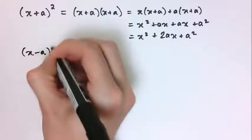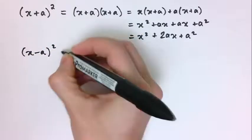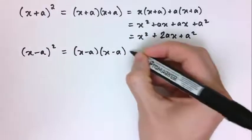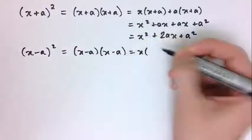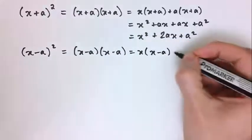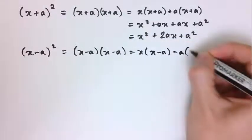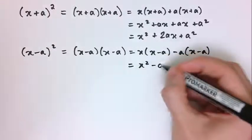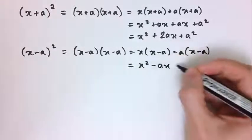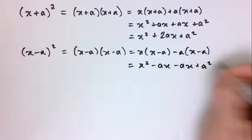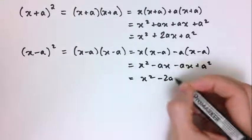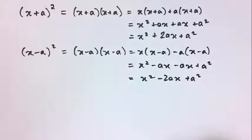A very similar result is for (x - a) squared. That's (x - a)(x - a), which gives x times (x - a) minus a times (x - a), so x squared minus ax minus ax plus a squared, which simplifies to x squared minus 2ax plus a squared.